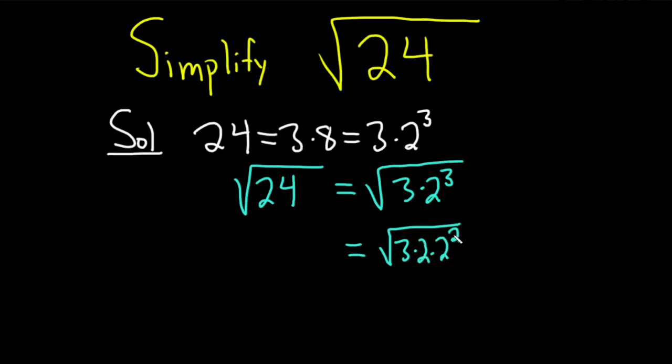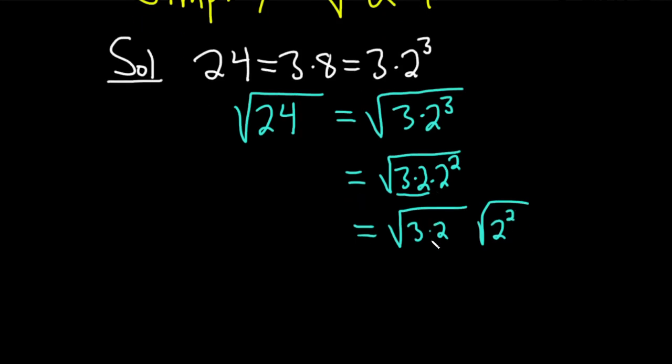And the reason we do that is because we can take the square root of something squared. So this is going to be, breaking it up, 3 times 2 and then square root of 2 squared. And then 3 times 2 is 6. So this is going to be square root of 6 times 2.